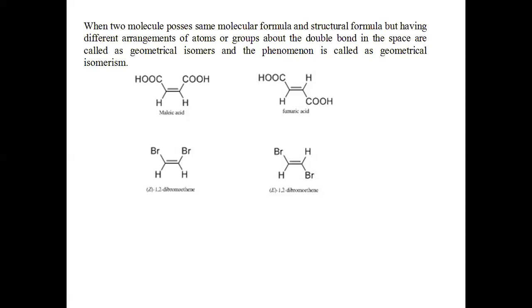So you have to understand that if the arrangement around the carbon-carbon double bond is different, then those two molecules are called geometrical isomers of each other.